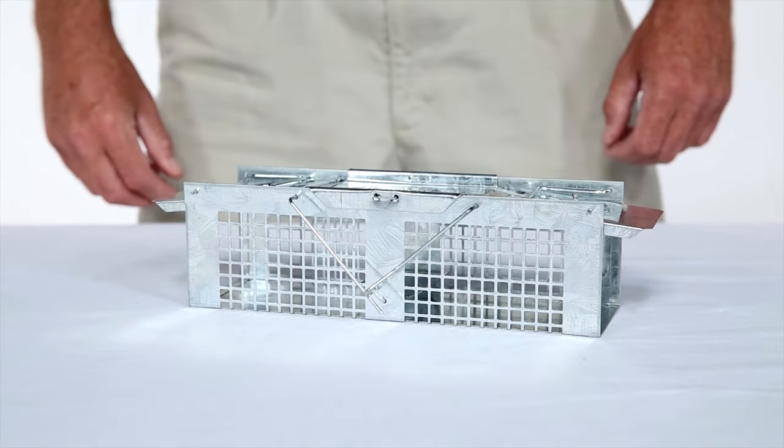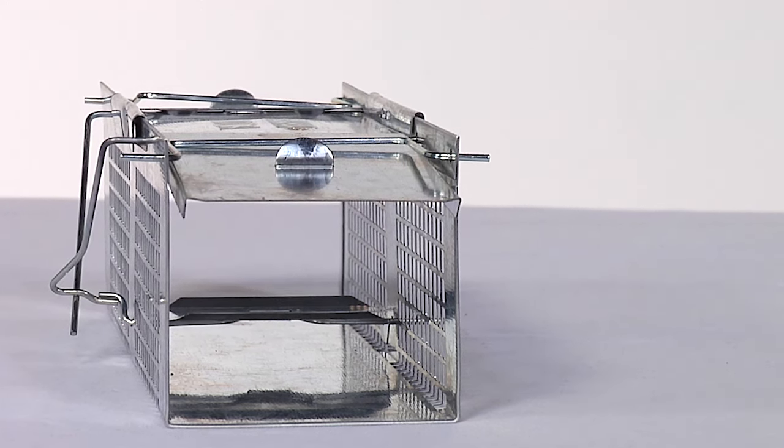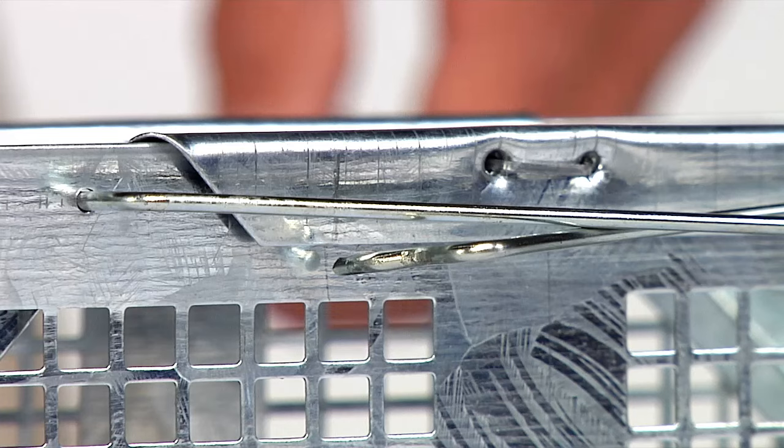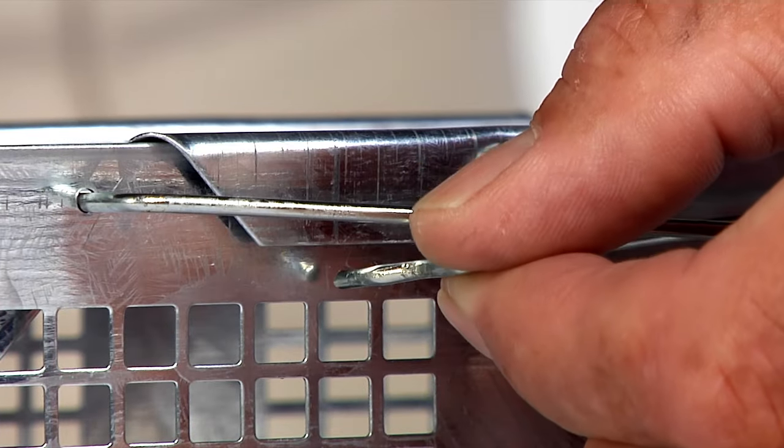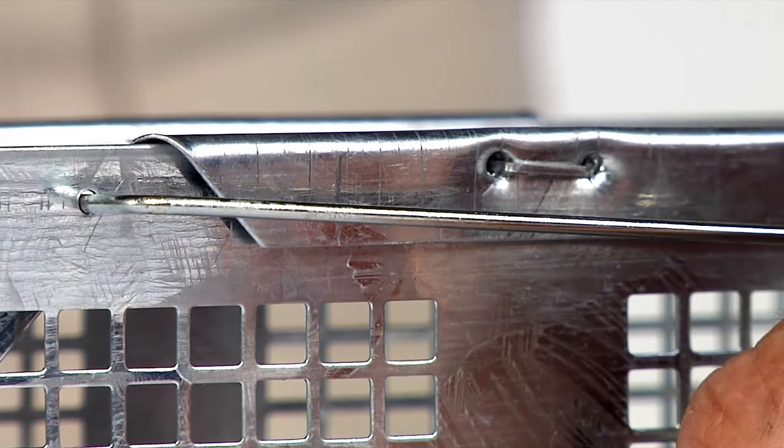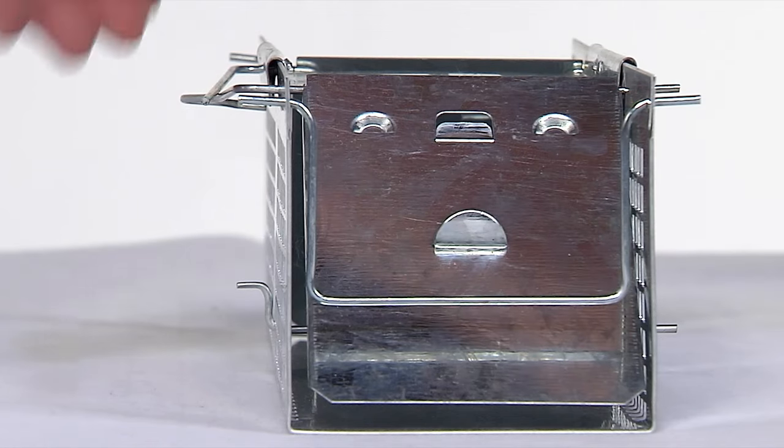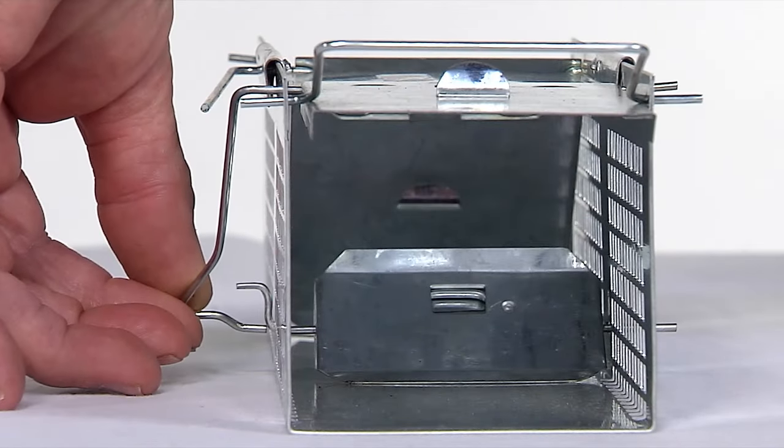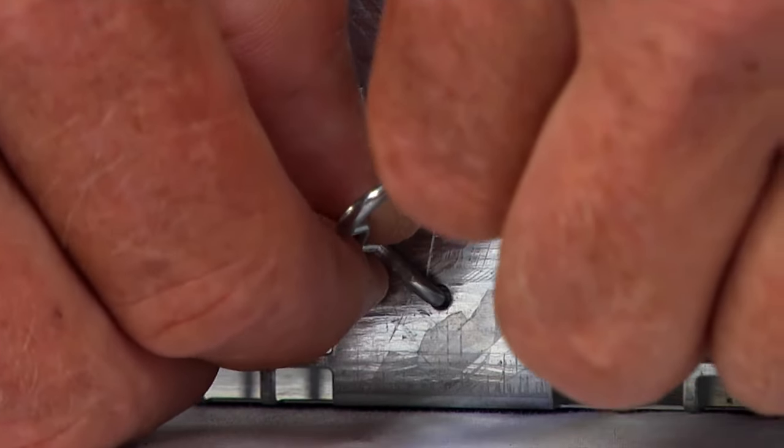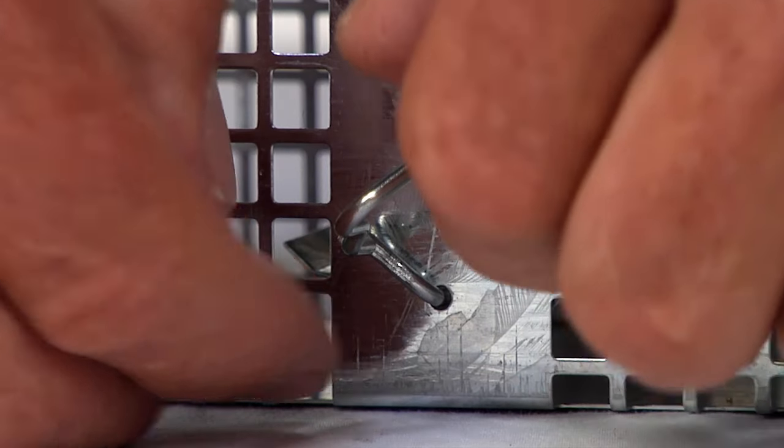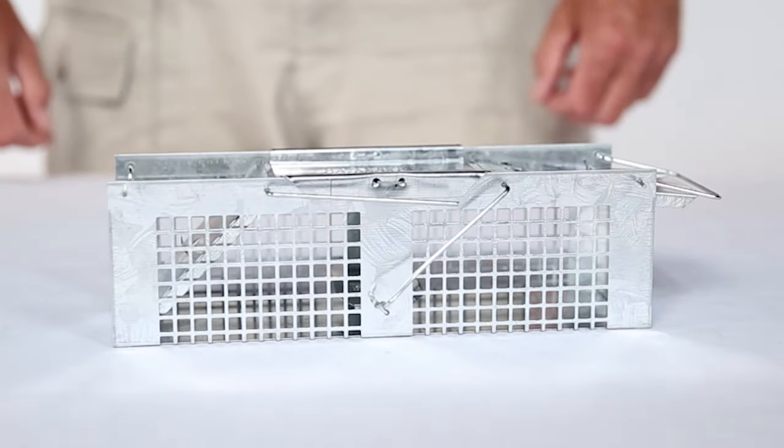To only set one door, push down on the offset trigger loop with the straight trigger rod disengaged. The door will open like this. Then position the flat end of the loop trigger rod under the flat end of the bait pan trigger so that the door is open.